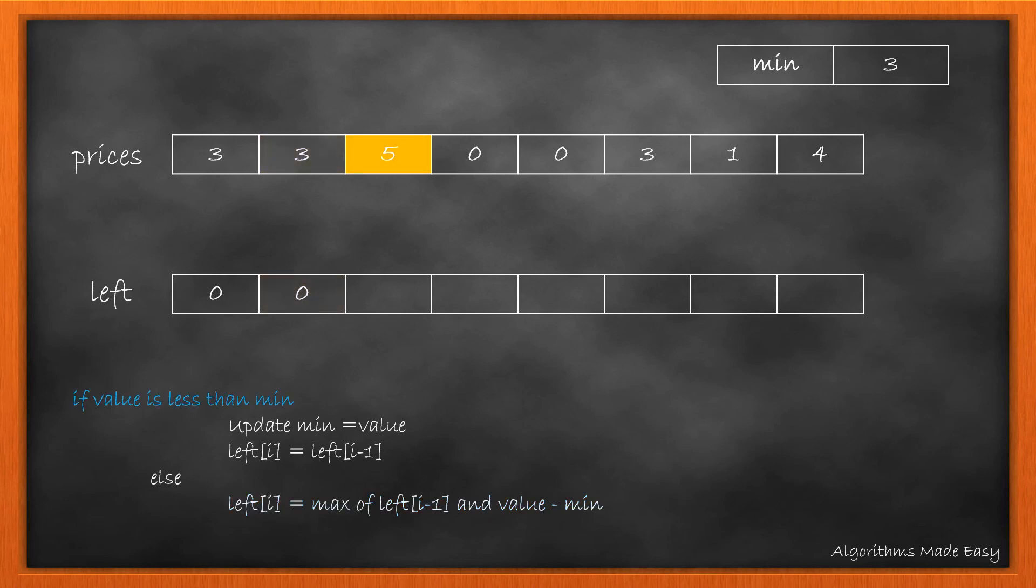Now we move ahead and again check the condition. This value is also greater than minimum, so we update the left array with 2. Now the value is less than minimum, so we update the minimum to current price and update the current index in left with the previous. We will continue looping till the end of the array.